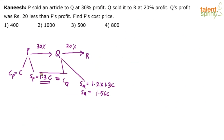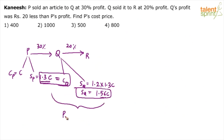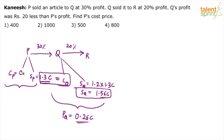Cost price of Q is 1.3C and selling price of Q is 1.56C. Profit equals selling price minus cost price, so profit of Q is 1.56C − 1.3C = 0.26C. For P, selling price is 1.3C and cost price is C, so profit of P is 0.3C.